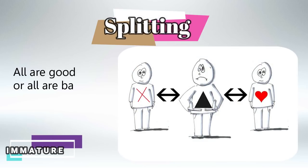Splitting is saying that all these people are good and all those people are bad. For example, saying all doctors are good and all nurses are bad.